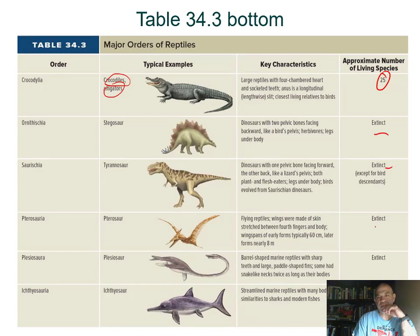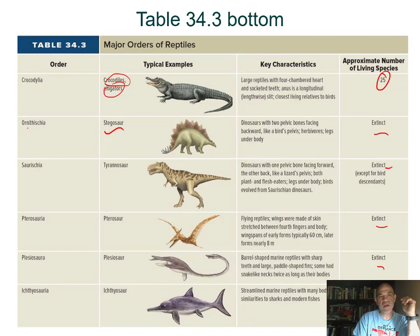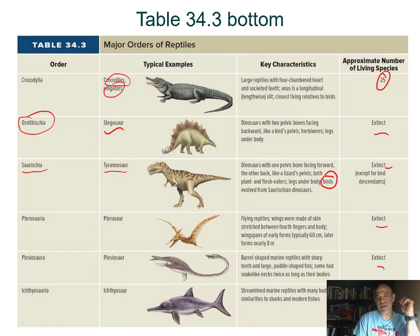The remaining groups in the table are extinct lineages including dinosaurs. One of the favorite orders is the stegosaurs. The tyrannosaurs—T-Rex—belong to an order called Theropoda, a group that has descendants including birds. Then there were the Pterosauria like pterodactyls, and the plesiosaurs with long necks and aquatic lifestyles. Interestingly, some reptiles that evolved on land later went back into the water, showing convergent evolution with a fusiform shape and flipper-like structures.